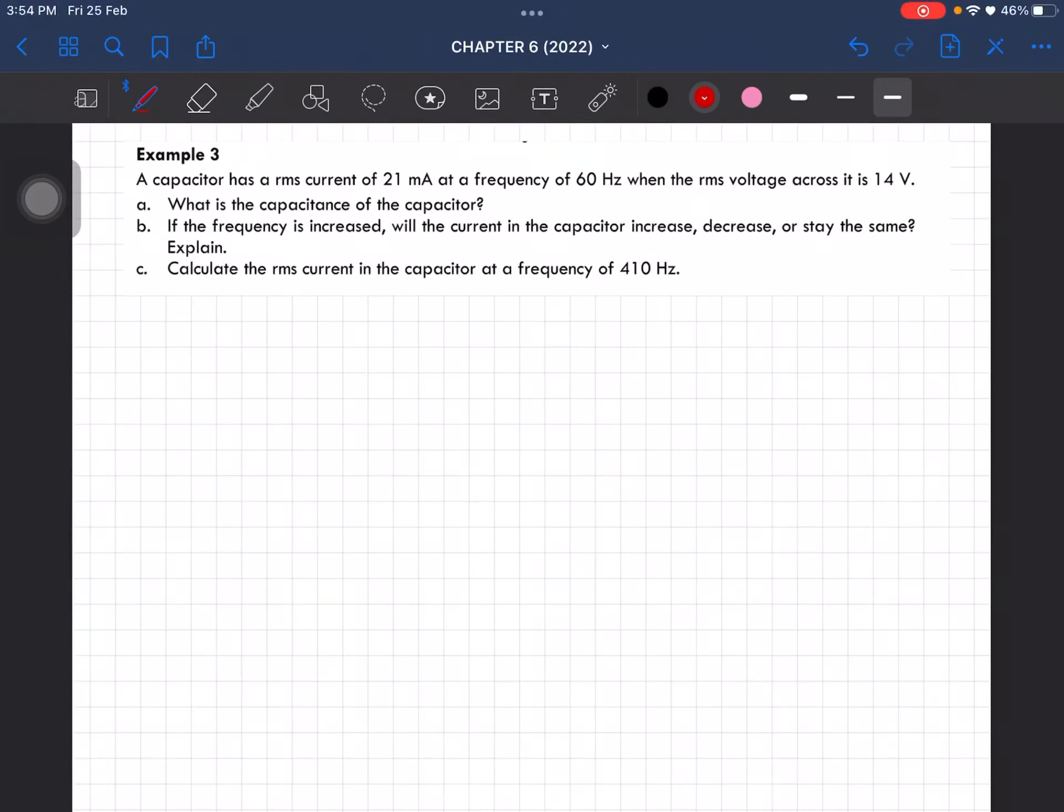For example 3, a capacitor has an RMS current of 21 milliampere at a frequency of 60 hertz when the RMS voltage is 14 volt. What is the capacitance of the capacitor?